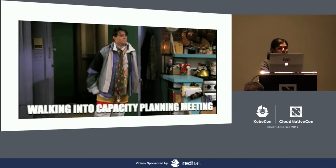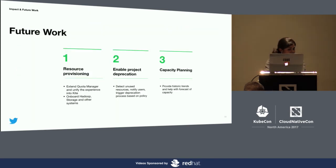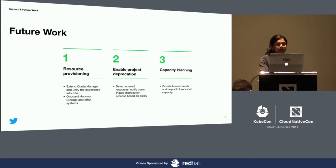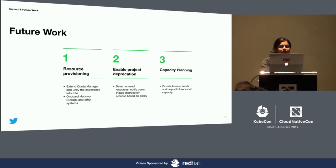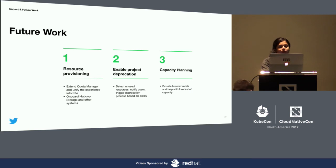With all the Chargeback data we have, we feel we are in a better position to provide service owners with growth forecasts for their services. To summarize: we started with visibility into resource utilization through Chargeback. Although we were able to find underutilized resources, without a proper ownership model we weren't able to attribute or act upon them. With service identity, we came up with a model that captures the organization and ties resources to a team. Our reports helped customers release unused resources. With Chargeback and Kite's ownership model, we are in a better place to provide teams with better forecasts of their resource needs to make informed decisions.